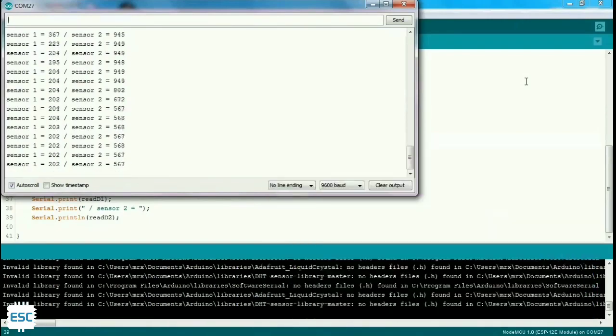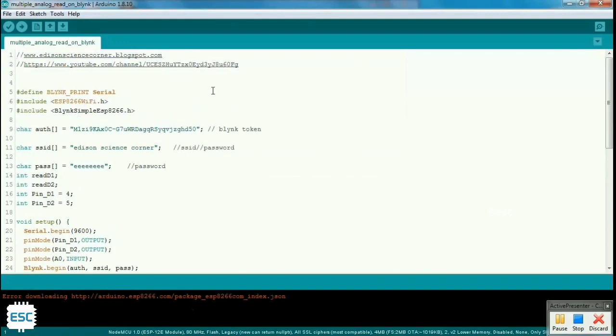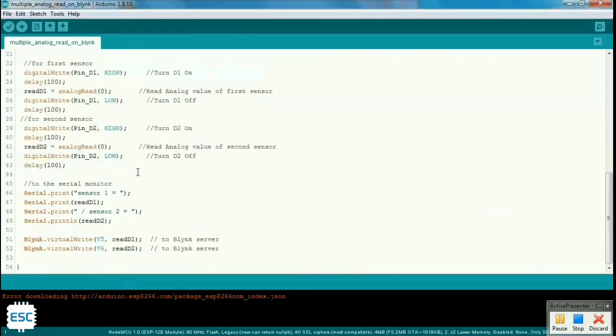Now let's add Blynk app to visualize our reading. First I added Blynk library, Blynk token, and also Wi-Fi credentials to my program. I used the virtual write function of Blynk app to visualize our reading.